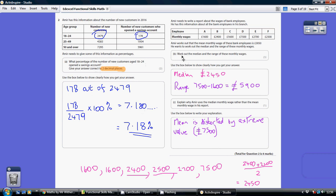Now for part B, we're being asked to do two things. First, work out the median of these monthly wages. The median is the middle one, but only once you've put them in order from smallest to biggest. So I've put them in order from smallest to biggest here.